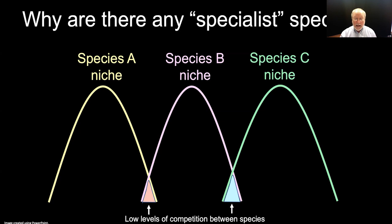Interspecific competition can be very severe and it can lead to a phenomenon called competitive exclusion. Competitive exclusion occurs when one species drives another out of the ecosystem or into extinction due to severe competition. One way to reduce interspecific competition is for a species to narrow its niche — in other words, to become more specialized. As species become more specialized, the level of interspecific competition declines, and as long as ecosystems remain relatively stable, this tendency to reduce competition through specialization can be very successful and lead to healthy, thriving populations.